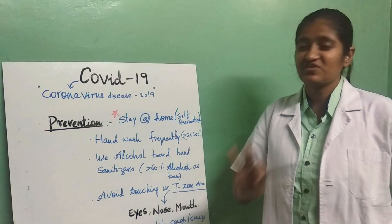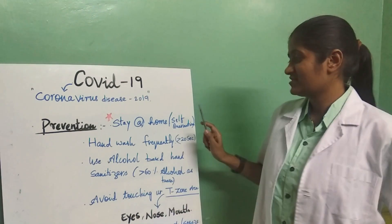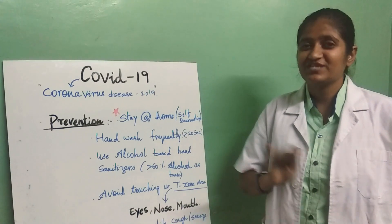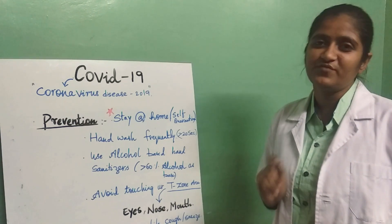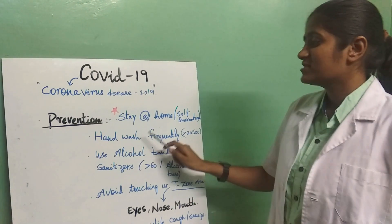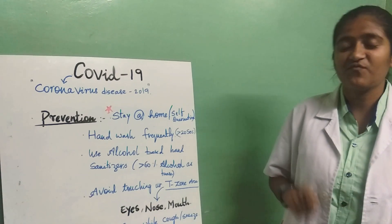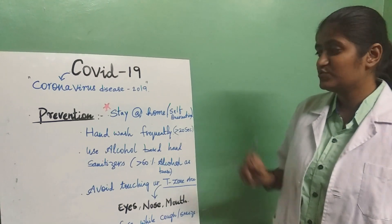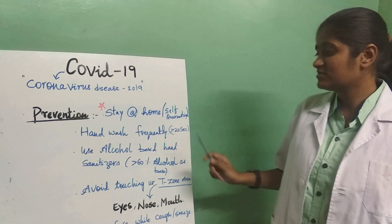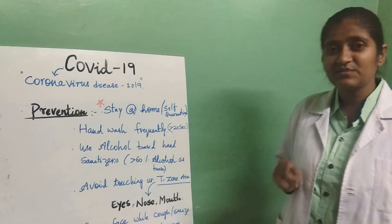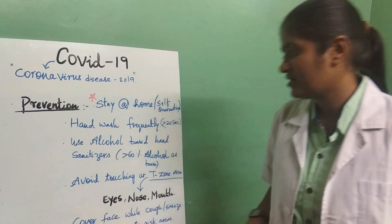The best prevention is to stay at home or do self-quarantine. This is possible for each and every person, apart from healthcare personnel who have to perform their duties. Frequent hand washing is essential — we have to wash our hands for more than 20 seconds, using a good alcohol-based hand sanitizer which has more than 60% alcohol content, to combat the viruses.